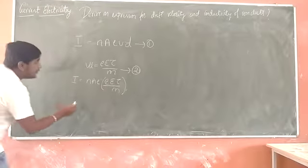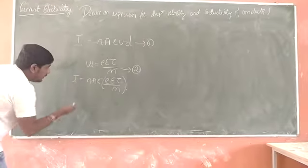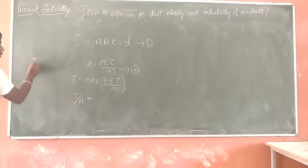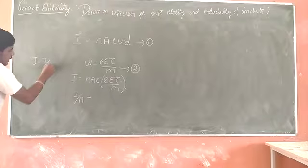This is an expression for drift velocity. Substituting that we get IAAV is the current density. J is equal to IAAV. Current density.